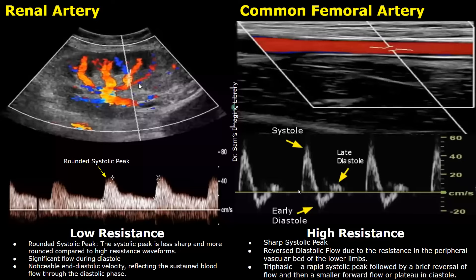The image on the right is of a high resistance waveform in a common femoral artery. A high resistance waveform will have a sharp systolic peak. Comparing it to the low resistance systolic peak, you can see it is very sharp and also narrow — this is a feature of a high resistance waveform.